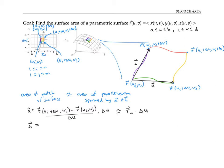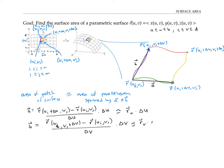Similarly, vector b has components equal to the difference of the coordinates of its endpoint and beginning point: r(u_i, v_j + delta v) minus r(u_i, v_j). Dividing and multiplying by delta v, I have a difference quotient where I'm changing in the v direction but holding u constant. So that's approximately r sub v times delta v.